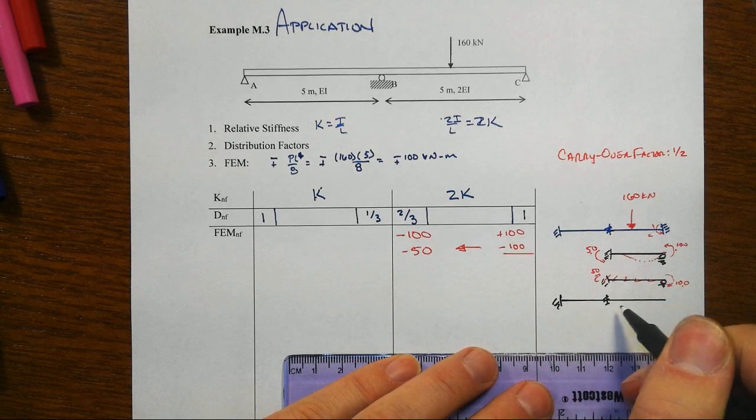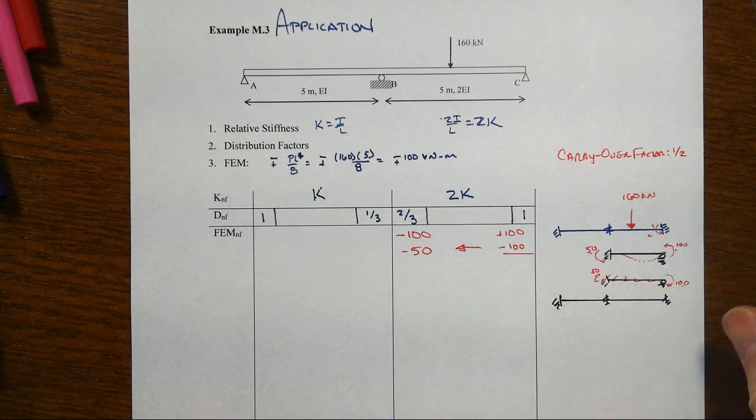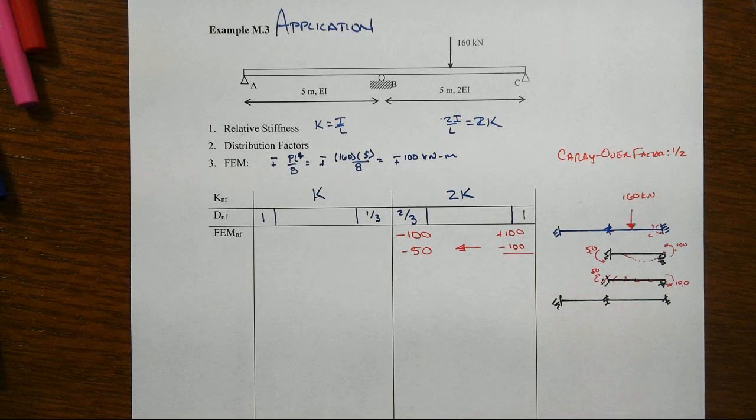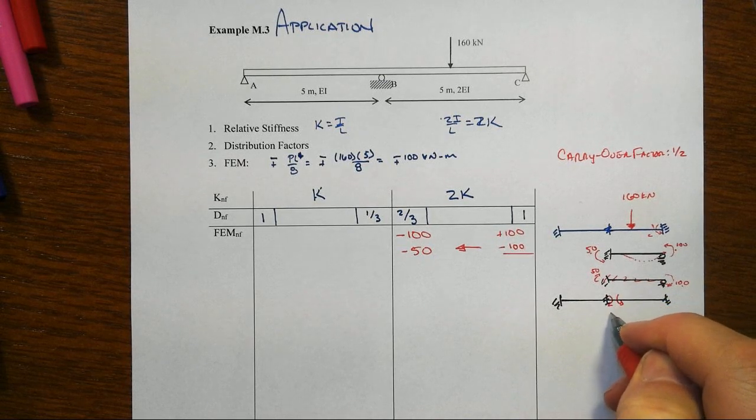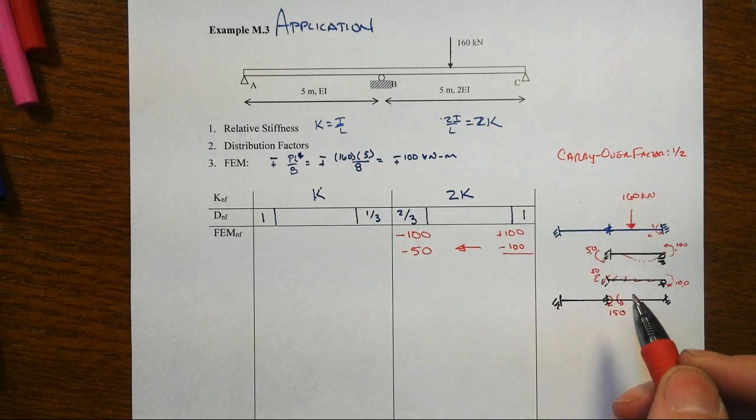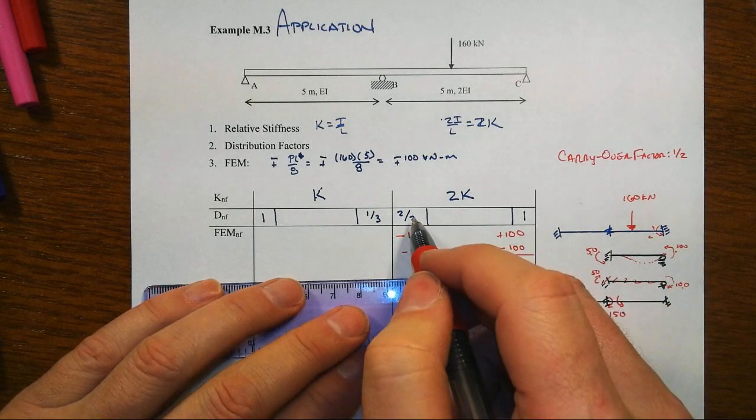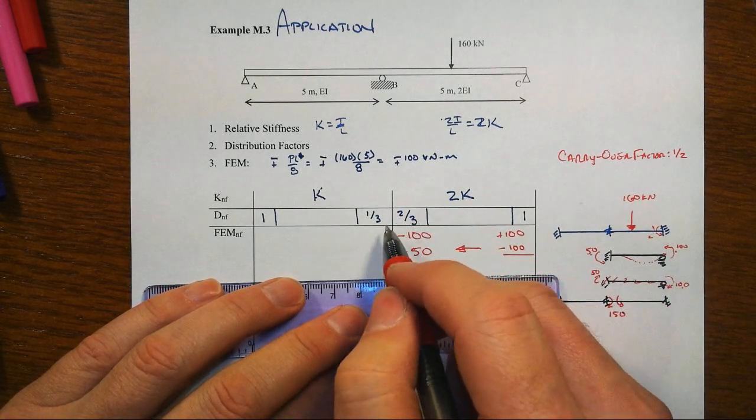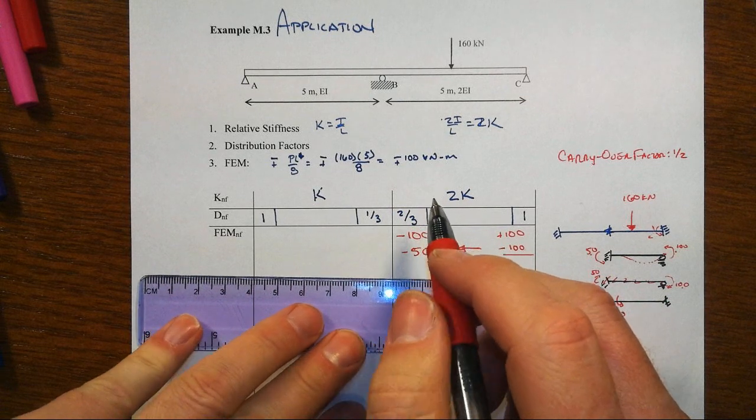So now we have accumulated, I'm not showing the deflected shape that would have gone along with that, we've accumulated now a 150 sitting here. That's a negative 150, that's what you see here. So now we want to pop that one. Everything else has been locked down again and we distribute it according to the relative stiffness. That's what we talked about in example M.2, right?